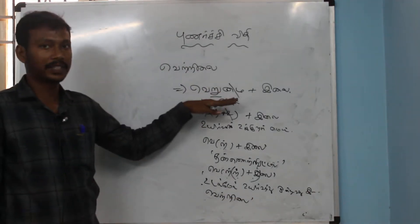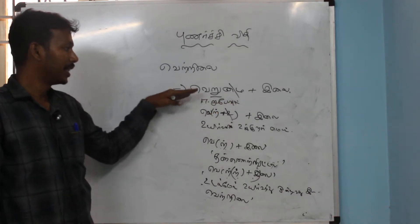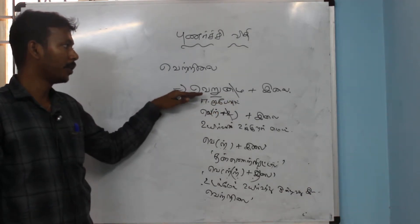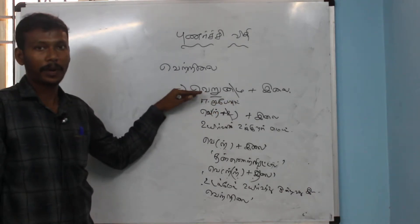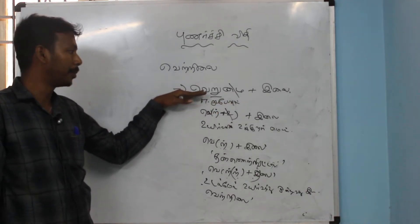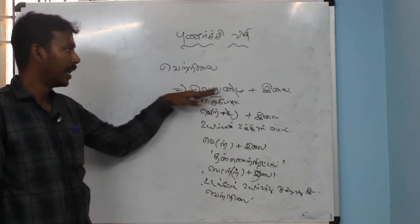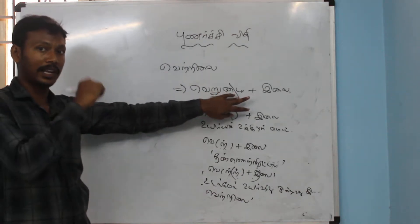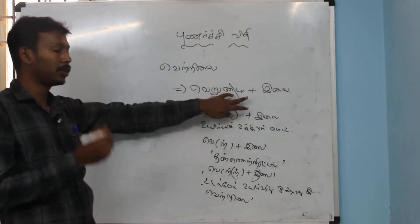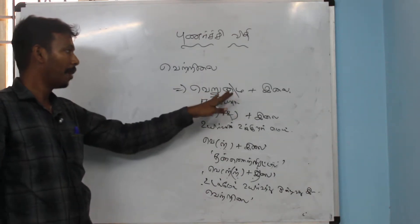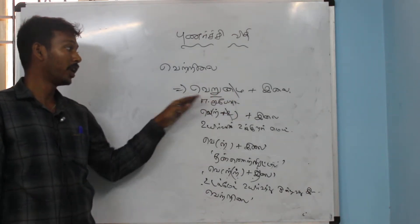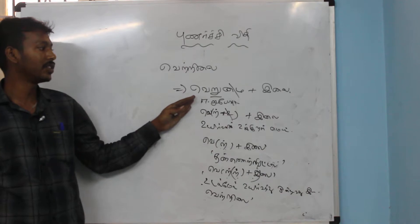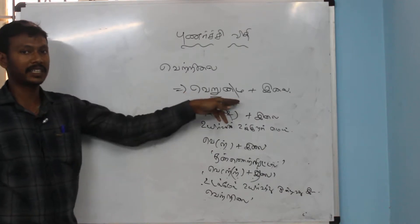First, we have to cut this one. The 3-0 is in the same way. Then we will cut this one and we will cut this one. If we take a look at the text, we can start in the same way.